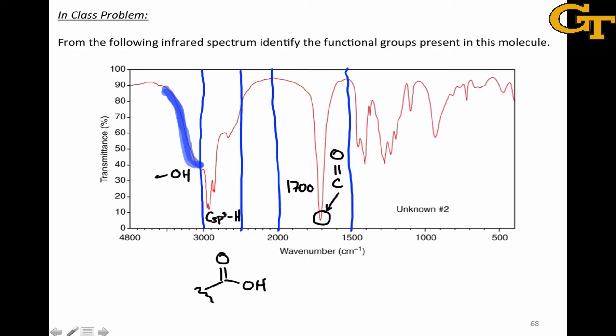Nothing else in this structure really jumps out at us. The fingerprint region consists mainly of medium to weak peaks with nothing terribly strong that's jumping out. And sure enough, the true structure of the compound that gives this infrared spectrum is an alkyl carboxylic acid, which contains just CSP3H, carbon-carbon single bonds, and a carboxylic acid functional group.